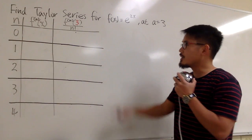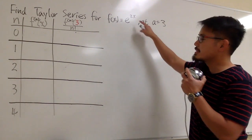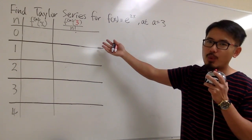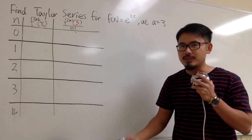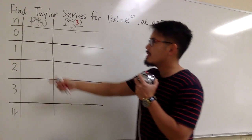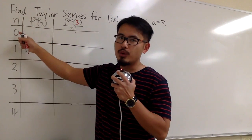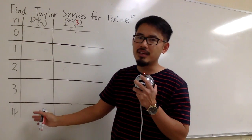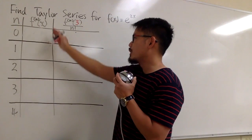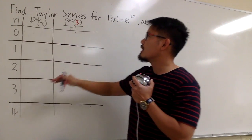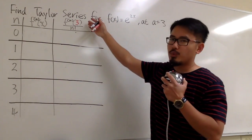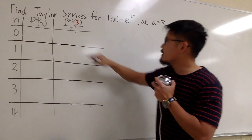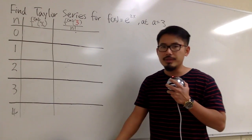We are going to find the Taylor series for the function e to the 2x at the center a equals 3, and this is how we are going to do it. We set up our table first, with n values going from 0 to 4. Then we work out the nth derivative of the function, and at the end we work out the Taylor formula. Be sure to plug in 3 because a is equal to 3.